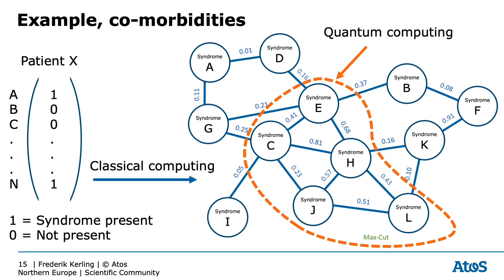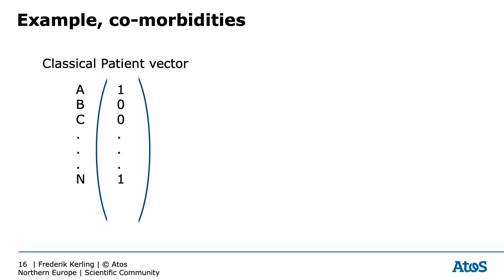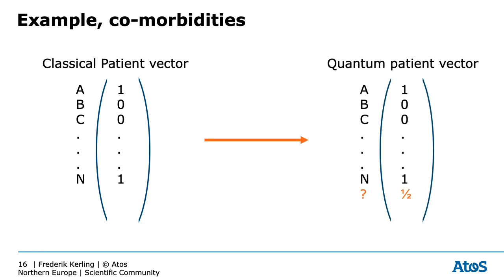For that, we use a quantum algorithm called QAOA and we're going to look for a max cut. This allows for an optimal group to be found — in this case the red dotted curve. Now let's see what would happen if, instead of syndromes being present as either yes or no, we introduce a random syndrome — undiscovered, unknown so far — and let's say that every patient maybe has it. So rather than a binary 0 or 1, we introduce a superposition of 0 and 1 at the same time.